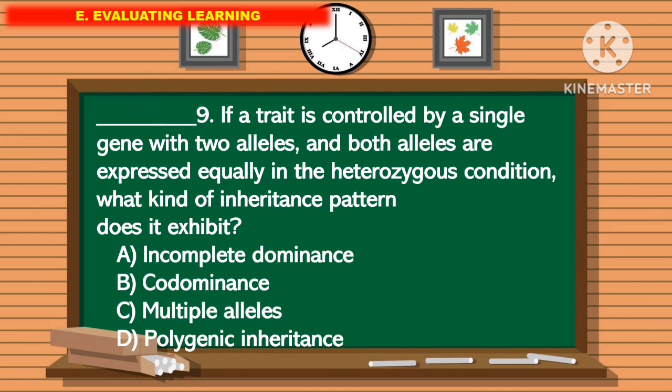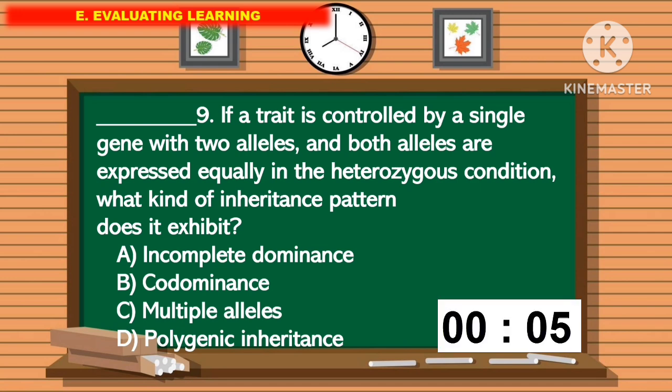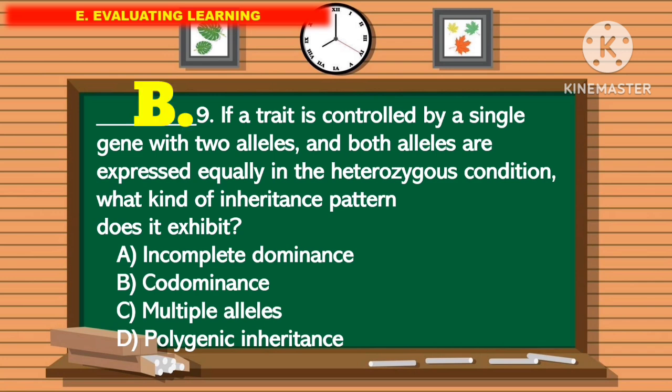For question number 9, if a trait is controlled by a single gene with two alleles and both alleles are expressed equally in the heterozygous condition, what kind of inheritance pattern does it exhibit? The correct answer is letter B.